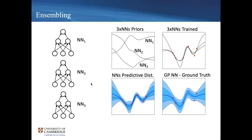One approach to dealing with uncertainty is a simple idea called ensembling. Rather than a single neural network, you have a small number of individual networks started from different initializations. In regions where you've seen data they all converge to similar estimates, but in regions you haven't they maintain diversity. Ensembles learn to output the same estimates where they've seen data, but for a new unseen data point they'll know they're uncertain — a simple idea that works well empirically.